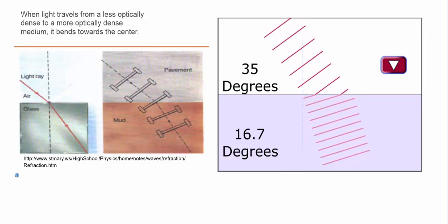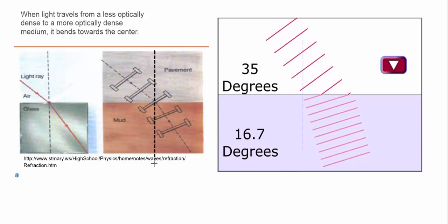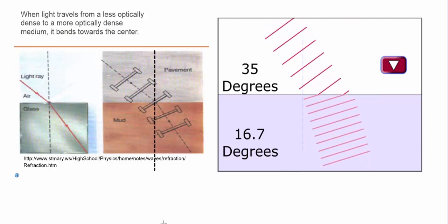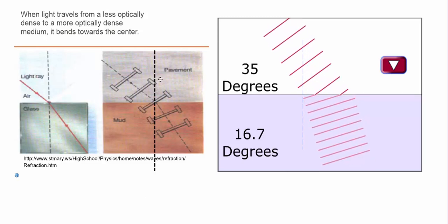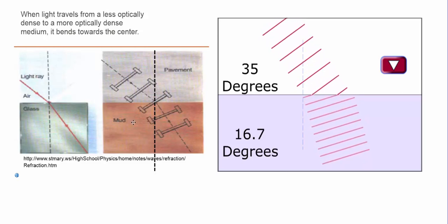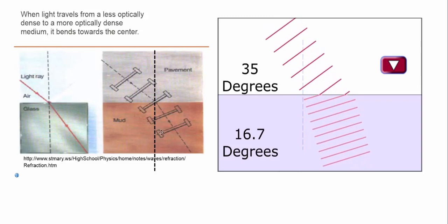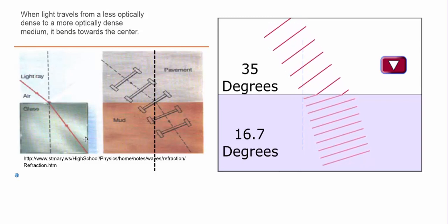And so it's going to turn towards a center line. And so we're going to refer to this center line as our normal line. So where the medium meets, where the two boundaries exist, draw a normal line. And when you go from something of lower density to higher density, the object will bend towards that normal line. So that's the case for light as well.